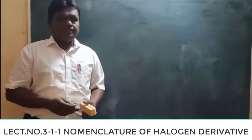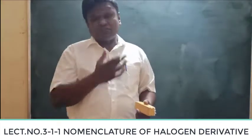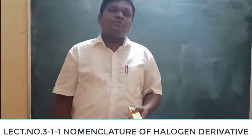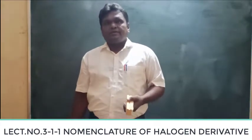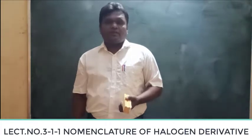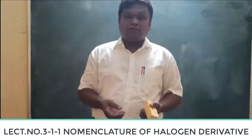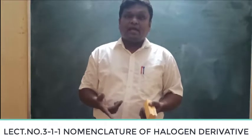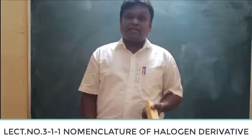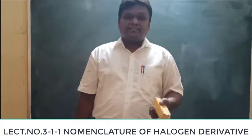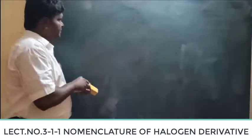Welcome back to the next lecture. Last time we saw something about Halogen Derivatives. In Halogen Derivatives, you saw types including different kinds of alkyl halides — for example, haloalkanes, allyl halides, vinyl halides, benzyl halides, and so on. Now we will start with the nomenclature of these compounds.